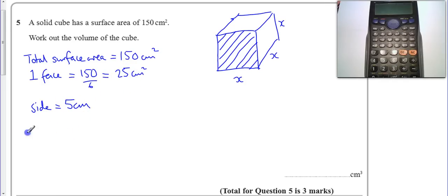Now once I've got that, that's easy. I'll find the volume. I can just do 5 times 5 times 5. And that gives me 125cm cubed.